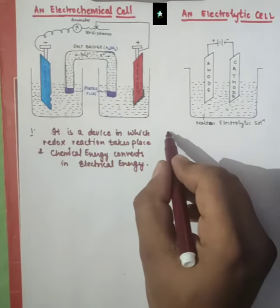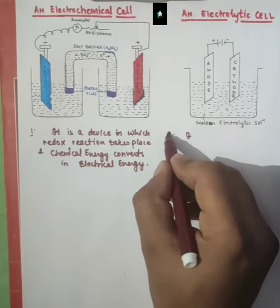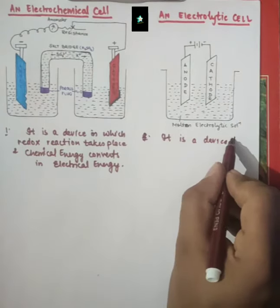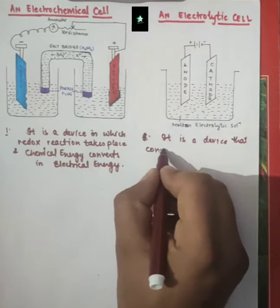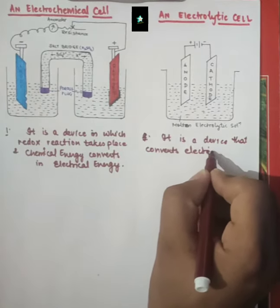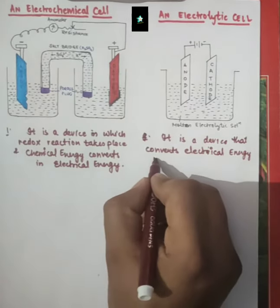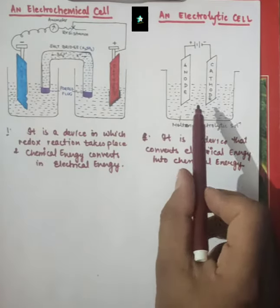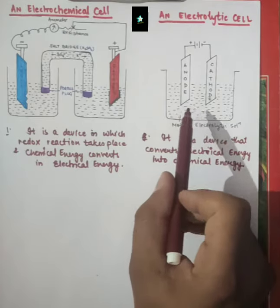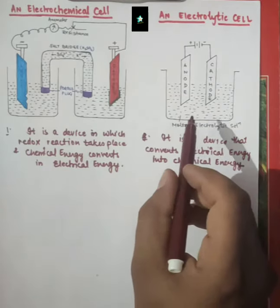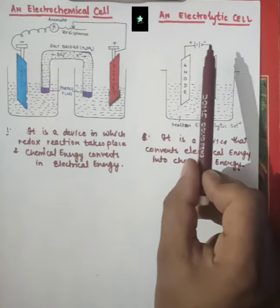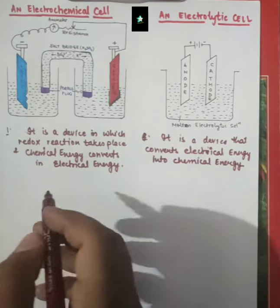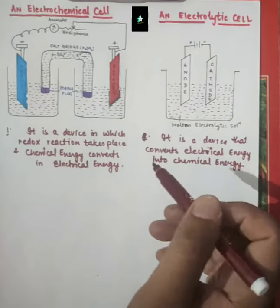The electrolytic cell is the complete reverse. It is a device that converts electrical energy into chemical energy. We supply electrical energy, the reaction occurs, and that electrical energy is converted into chemical energy. 'Electro' means electricity and 'lytic' means lysis — electricity is used to break down or carry out the reaction. This is the first main difference and also the definition of both cells.